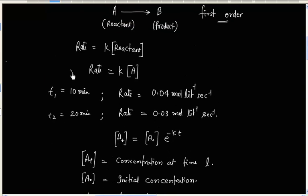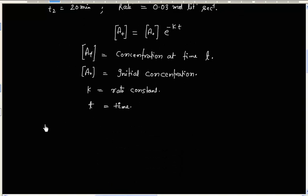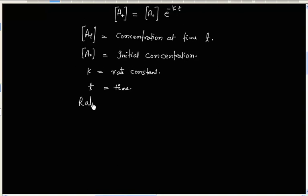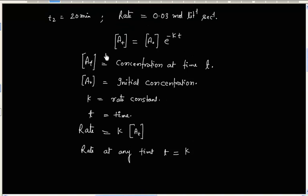Now expression for rate we can write k times concentration of A at time t. So rate at any time t is equal to k times concentration of A at any time t, which is given by this formula: A0 e to the power minus k into t.